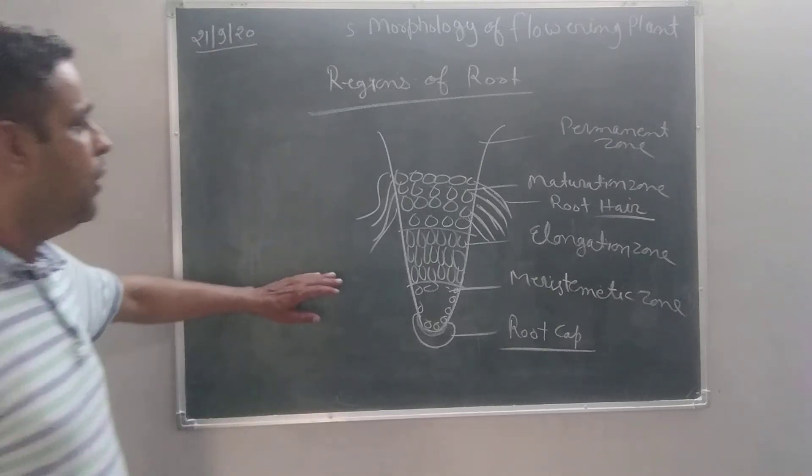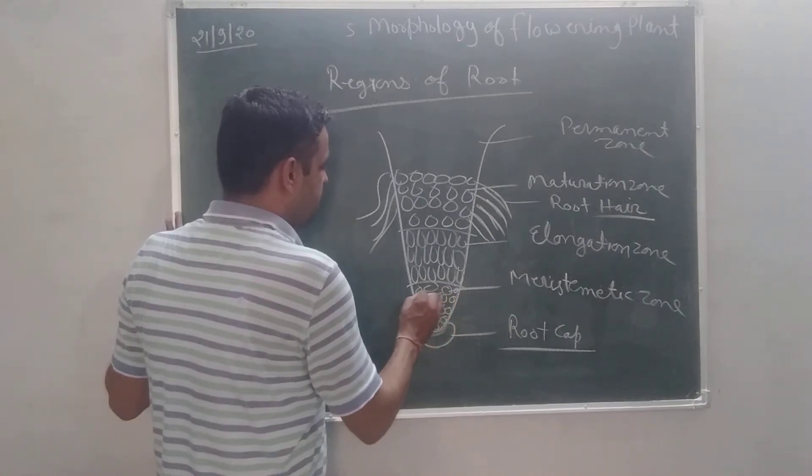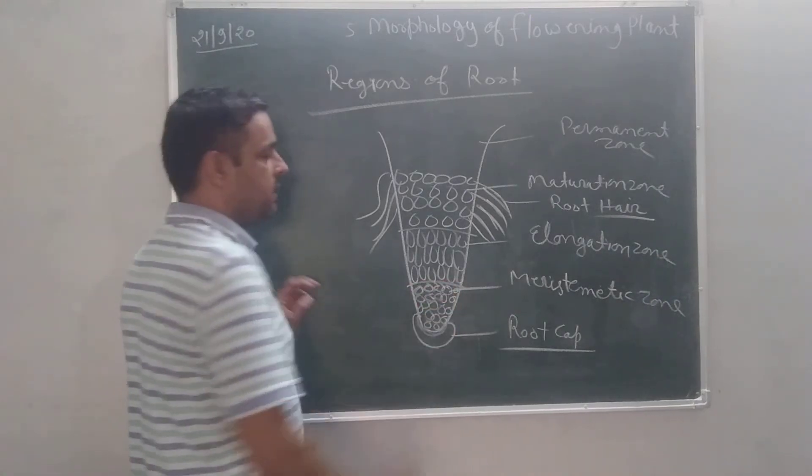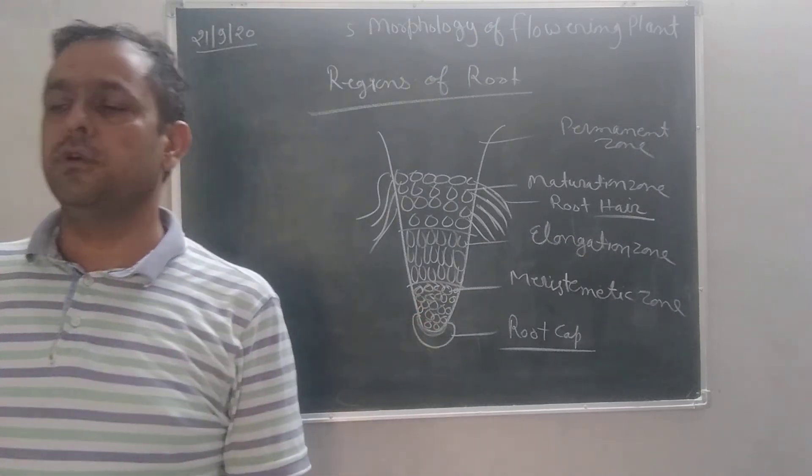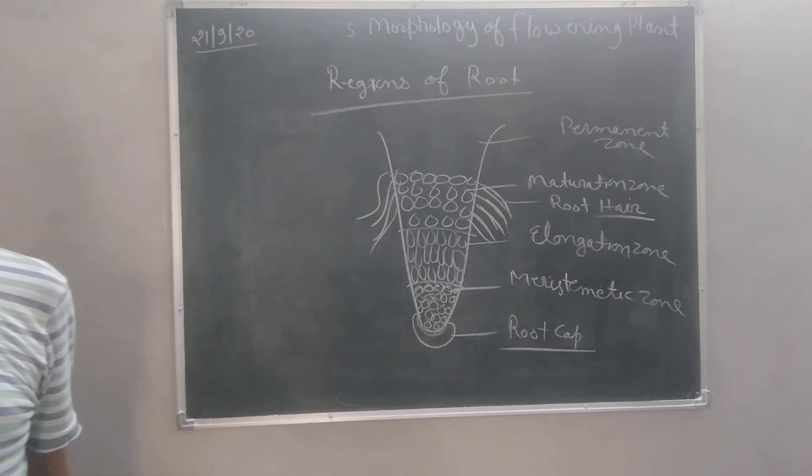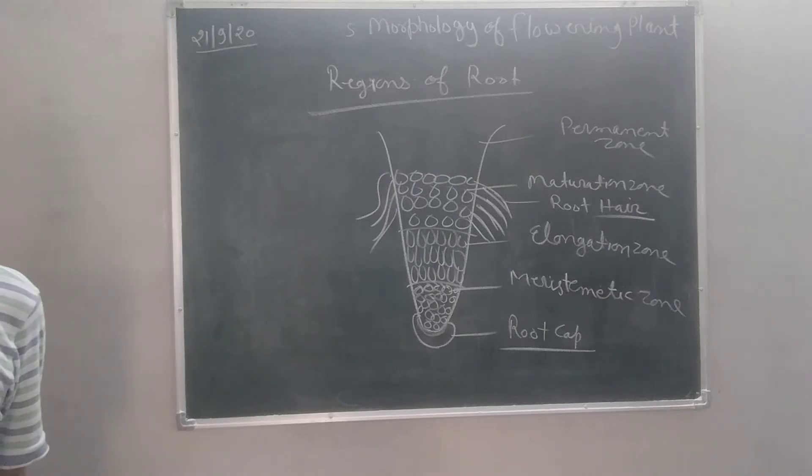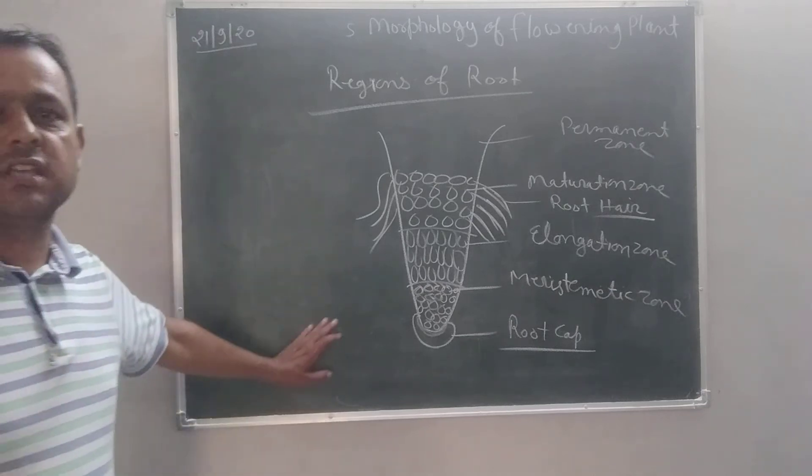Meristematic zone or the zone of cell division. This zone has dense cytoplasm in it and this area of root is continuously dividing. It is about 1 mm long. It represents the growing point. Cells are thin, have large nucleus and non-vacuolated. It is made up of active dividing meristematic cells. This region adds new cells and is responsible for longitudinal growth of the root. It also absorbs mineral salts.